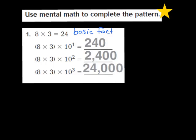In the next part of the problem, they take our 8 times 3, but this time they're going to multiply it by the first power of 10. When I multiply by the first power of 10, that means my exponent is a 1. I'm going to take my 24, which was my product from my basic fact, and add one 0. So my exponent is a 1, and I've now added one 0 to my 24.